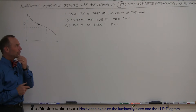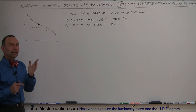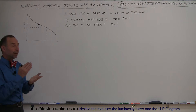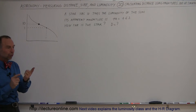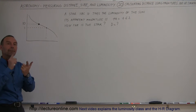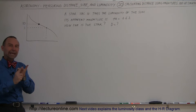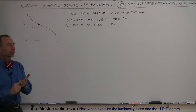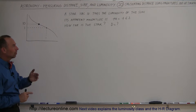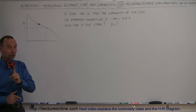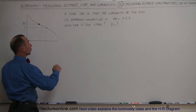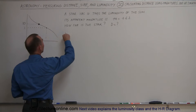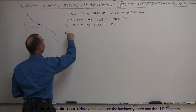At first you might wonder how to approach this, but going back to basics: to determine the distance to stars, I need to know both the apparent magnitude and the absolute magnitude. Since I was given the apparent magnitude, I first have to find the absolute magnitude. So what is the absolute magnitude?